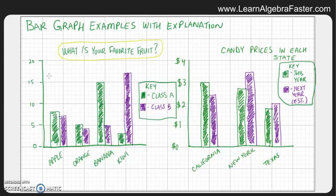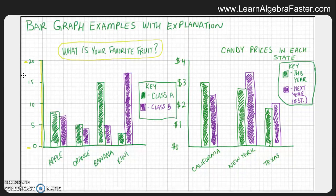Now let's discuss the vertical axis, which is the one pointing straight up and down — this line right here. We see that we start off with a minimum number of zero and we go all the way up to a maximum number of 20.